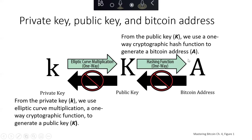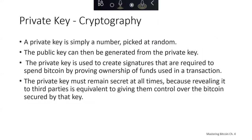It's easy to go in one direction, from the private key to the public key to the address, and it's virtually impossible to go in the other direction, from the address to the public key to the private key. Under today's technology, it is not possible to reverse this in our lifetimes. At some point in the future, these algorithms may be broken by new computers, new technology, or new algorithms, but not under today's technology.